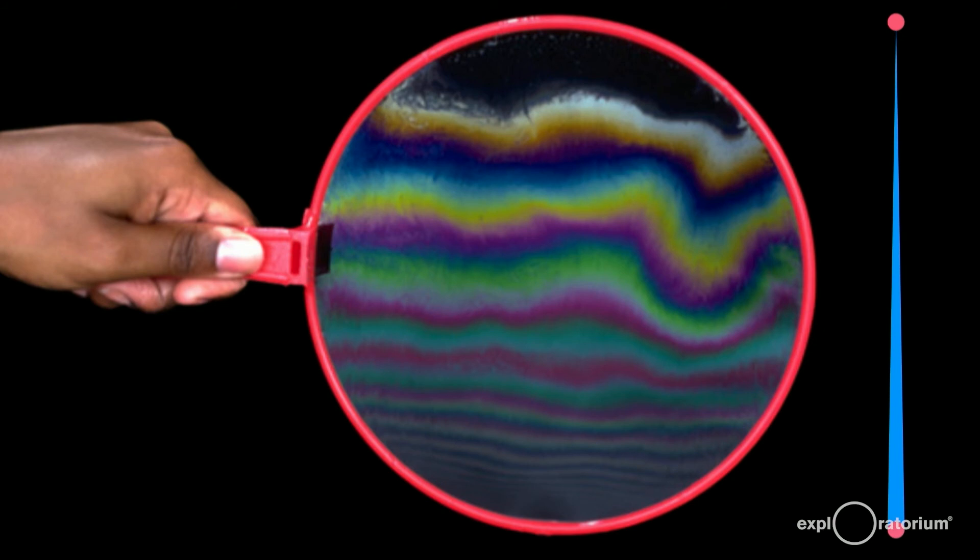Seen from the side, it might look like this, highly exaggerated. Held vertically, the bubble drains, so the top of the bubble is much thinner than the bottom of the bubble.